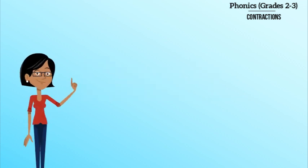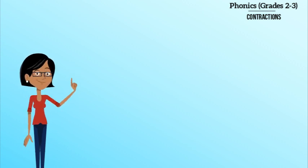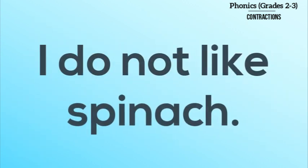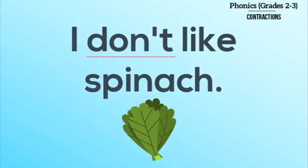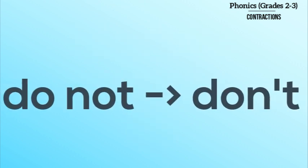Here's another one for you, good detective. Can you find the two words that can be made into a contraction in this sentence? I do not like spinach. Easy! I don't like spinach. Do not becomes don't, and I have to remember to add the apostrophe. And I really don't like spinach.